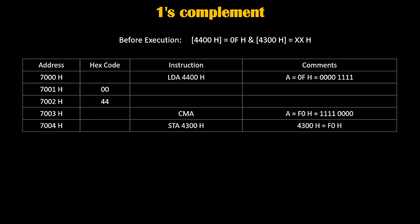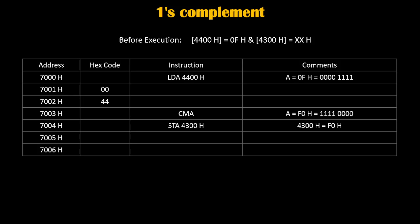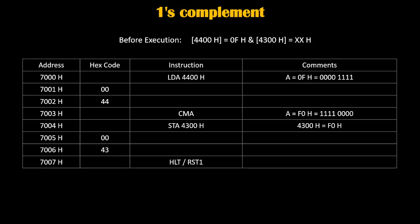STA 4300h is a 3-byte instruction, so it will take 3 memory locations of our program. The opcode of STA is written at 7004h, and 4300h is written in reverse order: first 00h, then 43h. Finally at 7007h we terminate the program by writing the instruction HLT or RST1, which is used for stopping execution of the program. We have successfully found the complemented value of the number at 4400h and stored it at 4300h.